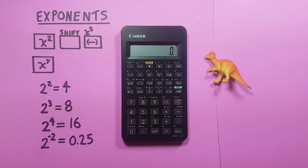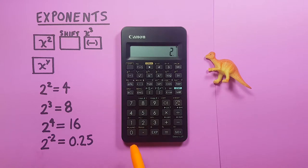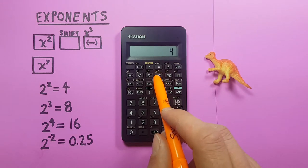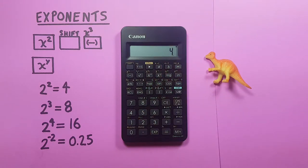If we just want to square a number, we would enter it on the calculator. Let's say we want to square 2 and then hit the x squared key. That squares our number, easy enough.